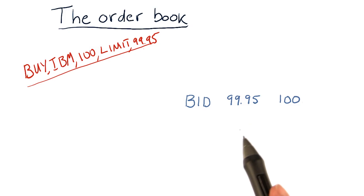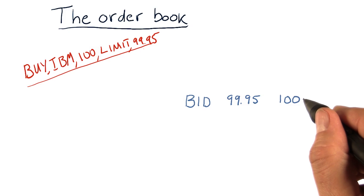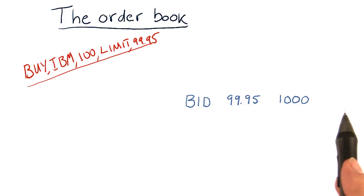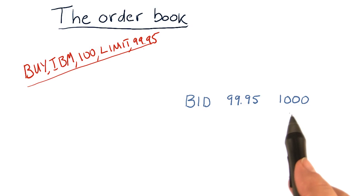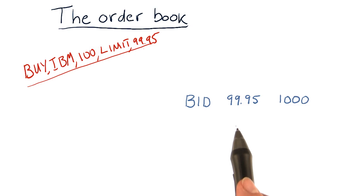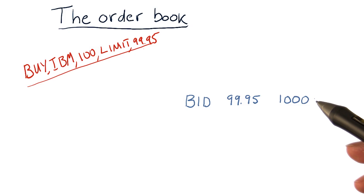Others may send in orders like yours, and this number just keeps getting larger depending on how many orders come in. When this is displayed publicly, people just see that there's interest — maybe from various people — in 1,000 shares of IBM at $99.95. So far, nothing's been bought or sold yet, because we don't have anybody willing to sell.